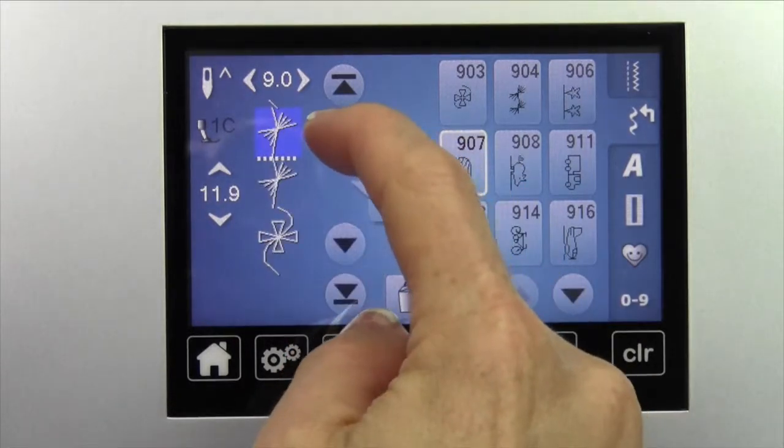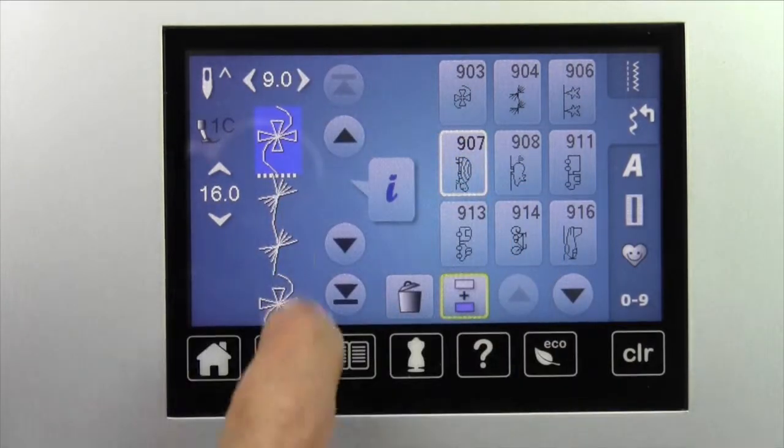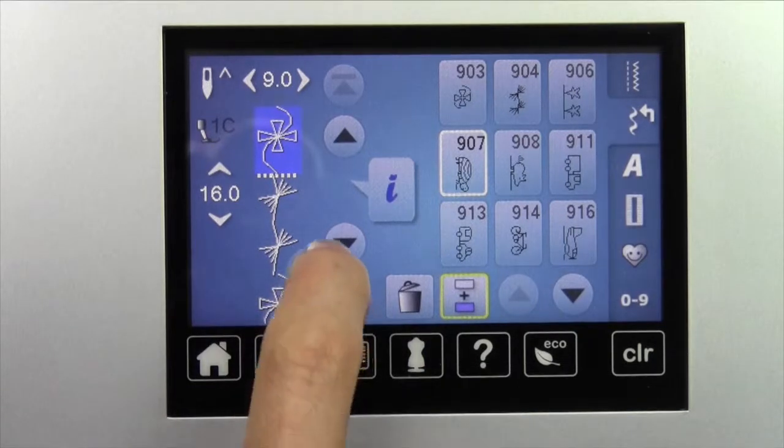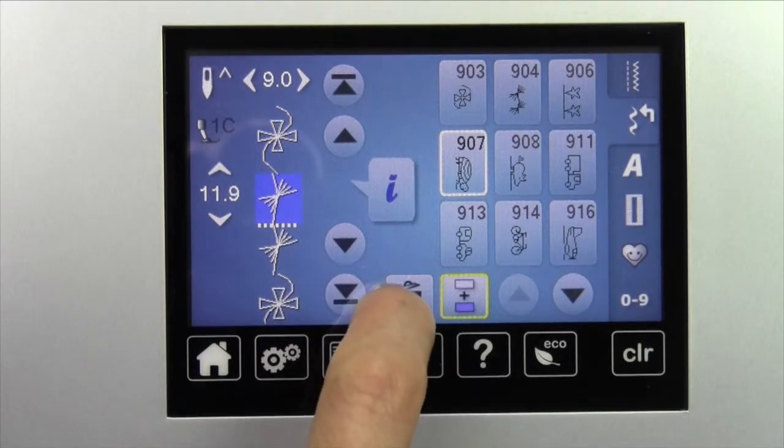You can arrow up, stitch by stitch, and whatever's highlighted, let's say I didn't want to have that extra one in there, also two, I can delete it.